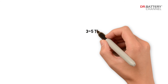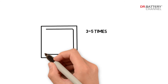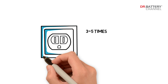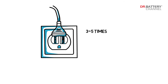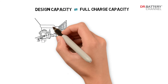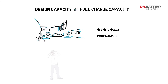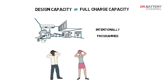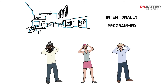However, for some batteries, the FCC and DC remain the same even after 3 to 5 discharging cycles. This is likely because the manufacturer intentionally programmed the chips to hide the real FCC and DC data, so there is no way for you to find out the truth. But the question to ask is: why did they do it? What are they hiding?